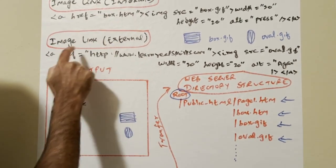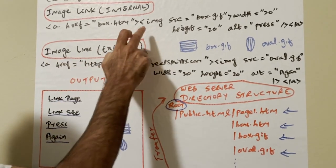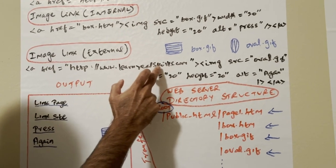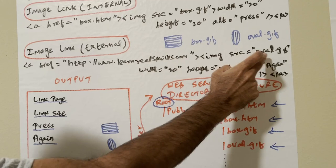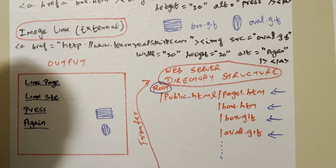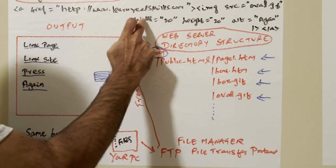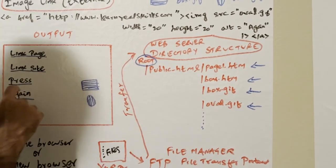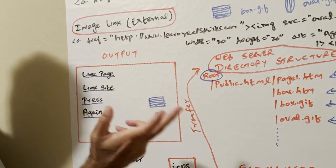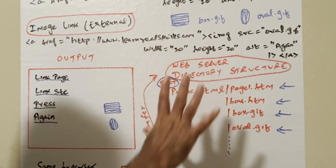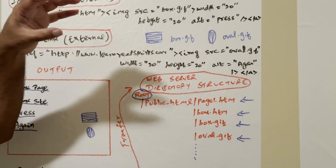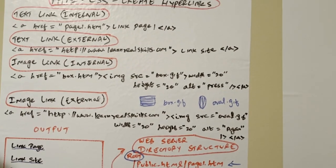Next, image link external. See here, I put IMG source. Here I am putting the actual external website, which is learnrealskills.com, and then putting oval.gif, another image file. It's transferred from here through FTP to the directory structure, width, height. So when you press this one, when you click on this, this will appear. Click on this, this will appear. How it fetches the actual files from the directory. This is the basic structure, how hyperlinks work, how files are fetched and displayed on the screen. Thanks for watching.